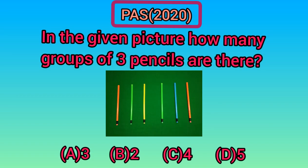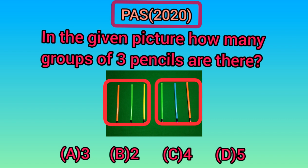Students, now it's time for your practice question. In the given picture, how many groups of 3 pencils are there? Let's solve this. 1, 2, 3 — there is 1 group of 3 pencils. 1, 2, 3 — there is another group of 3 pencils. How many groups of 3 pencils are there? Yes, there are 2 groups of 3 pencils. So, option B is correct.